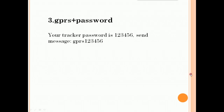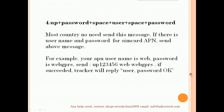For most countries, sending the above messages will make the checker online. But for some countries, the APN has a username and password, so you need to send a fourth message. The last part is the APN password — note this is the APN password, not the checker's password. After all these messages are sent, you can set the checker online.